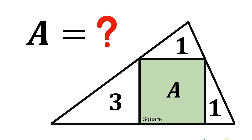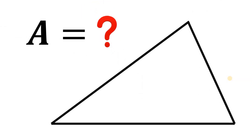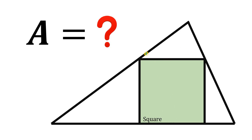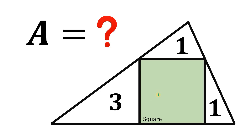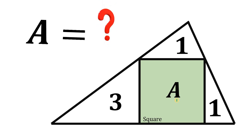Can you solve this geometry challenge? Here's the question: start with a triangle, and inside of this triangle draw a square. It is given that the area of the triangle on the top is one square unit, the area of the triangle on the right-hand side is one square unit, the area of the right triangle on the left side is three square units. The question is: what is the area of this square? Pause the video and see if you can answer this.